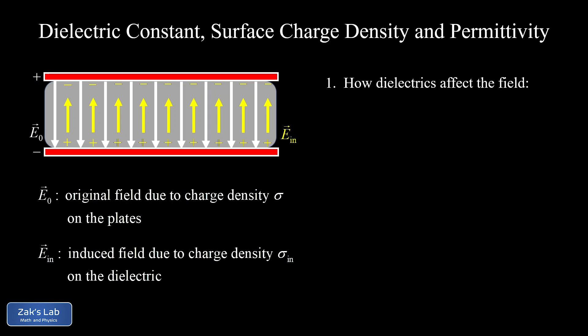The first thing we want to do is look at how the presence of a dielectric is going to affect the electric field inside this capacitor. Just by looking at the geometry, we see that the induced field is going to reduce the overall field inside the capacitor because it points in the opposite direction to the original field from the charged conducting plates. When we vector add those two fields, we get a smaller result.